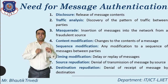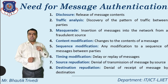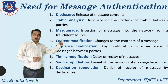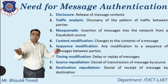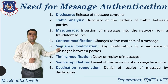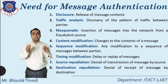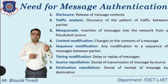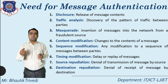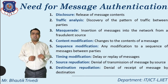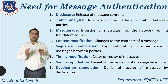Need three is masquerade — one entity pretends to be another entity and inserts a message into a network from a fraudulent source. Need four is content modification — directly changing the content of the message. Need five is sequence modification — modifying the sequence of messages between two parties. Need six is timing modification — delay or replay of the message, meaning a message is not sent within the expected time limit but transmitted after some delay.